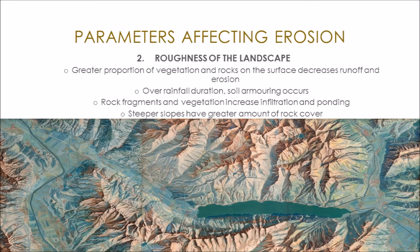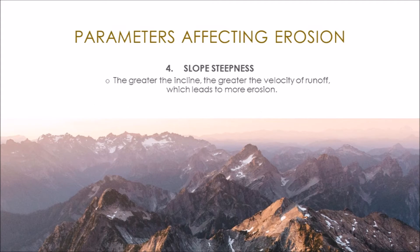The longer the slope length, the higher the potential for runoff and erosion. The higher surface area creates a greater buildup of velocity and intensity down the slope. A greater steepness also increases the velocity at which runoff flows over the landscape, creating more energy to dislodge particles and thus greater erosion.